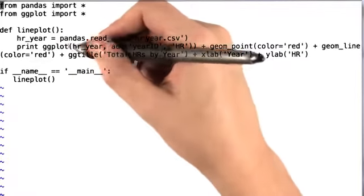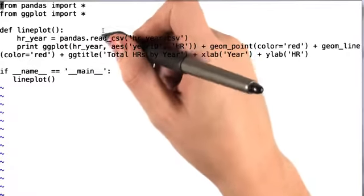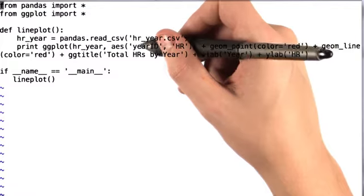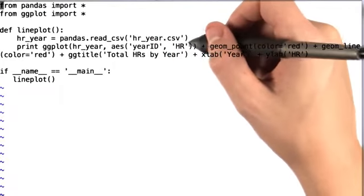Then we print ggplot, where we say that our data source is going to be the hryear DataFrame, and the variables that we want to plot are year ID and home runs.